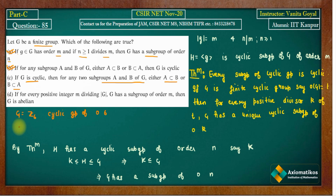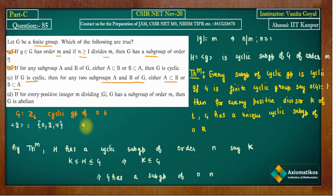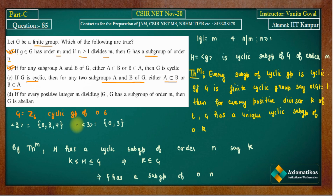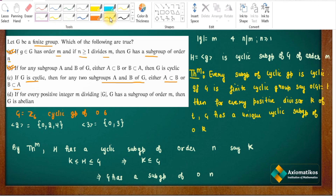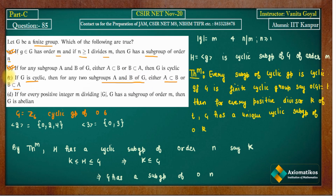In Z6, consider the subgroup H1 = ⟨2⟩ = {0, 2, 4} and the subgroup H2 = ⟨3⟩ = {0, 3}. Neither H1 ⊆ H2 nor H2 ⊆ H1. So the condition in Option C is not necessarily satisfied. Therefore Option C is false.